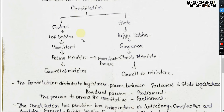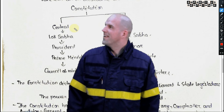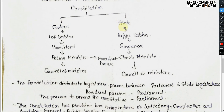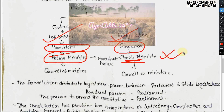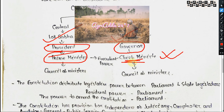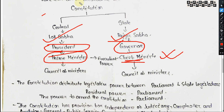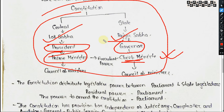The Indian legislature — Parliament — is divided into two houses: the House of the People (Lok Sabha) and the Council of States (Rajya Sabha). The President is the constitutional head at the Union level; at the state level, the Governor is the head. Executive power rests with the Prime Minister at the Centre and the Chief Minister in states. The Constitution distributes legislative power between Parliament and state legislatures. Residual powers and the power to amend the Constitution vest with Parliament.